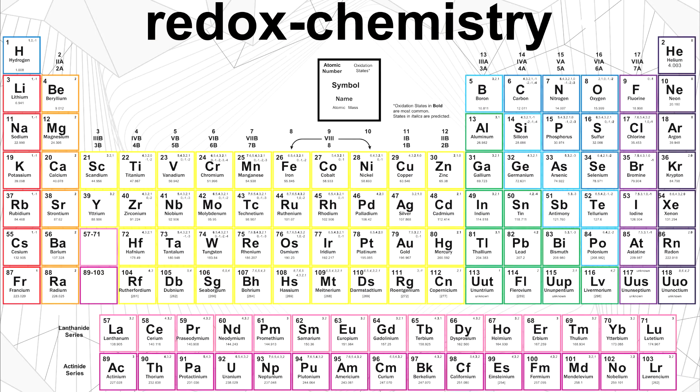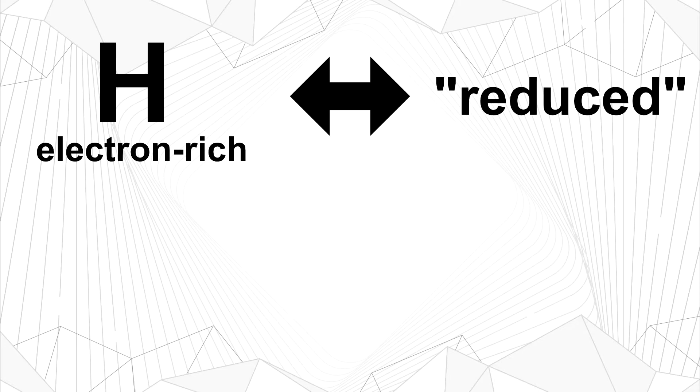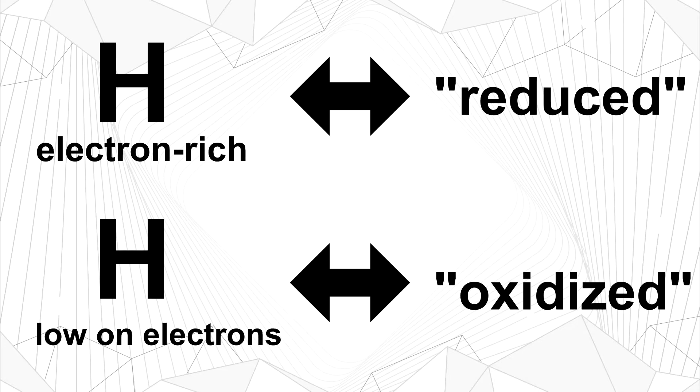Before we can talk about the actual synthesis process, we first need to talk about redox chemistry. Elements can have different oxidation states. The way you can think of this is that different atoms can carry different amounts of electrons. If an atom is carrying many electrons, we say it is reduced, and if an atom is carrying few electrons, we say it is oxidized.